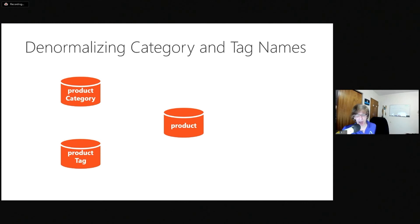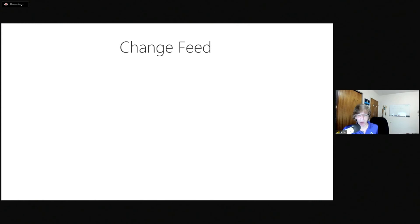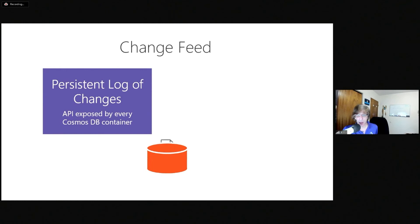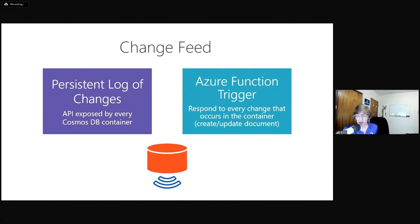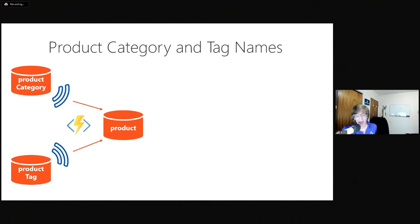A product category name could change, or a product tag name could change. We need to cascade that change to the product container. That's where the change feed comes in — a very powerful mechanism in Cosmos DB that I have an entire Pluralsight course on. It's essentially event-based but also persisted, so you can always rewind and replay events of what has happened in a container. The easy way to listen to it is with an Azure Function trigger. You can respond to a change in any way you need to. There's a change feed on the product category and product tag containers, and our Azure Function wakes up on a change and cascades those updates to the product container.